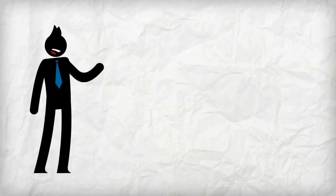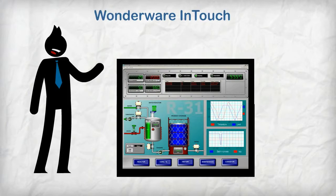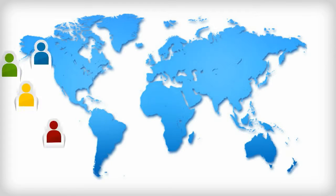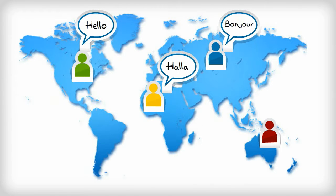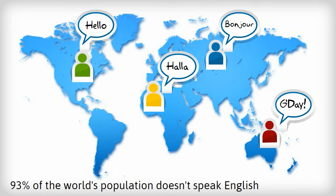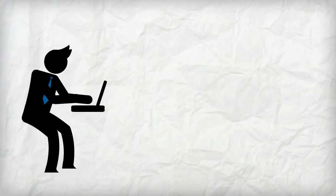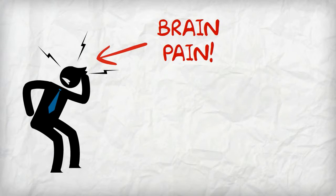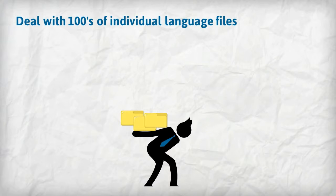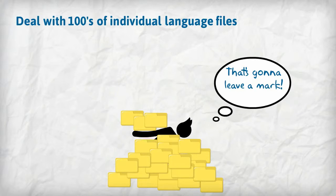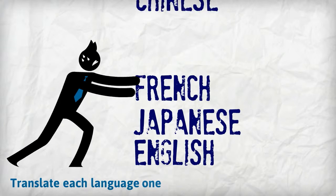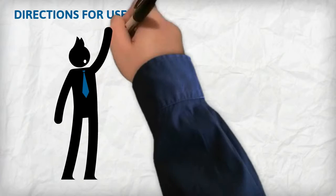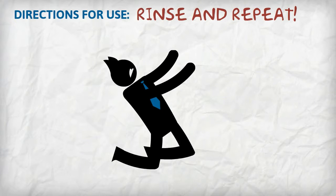You have an amazing application you've created with Wonderware System Platform using InTouch and Application Server, and you want to sell it to your customers all around the world, and they want it in their native languages. But translating your content into those languages can be a real pain, because you need to manage all those individual content files, do the translation to each language one by one, and worst of all, when you create your next masterpiece, you have to start all over again, even if you've already translated similar content before.